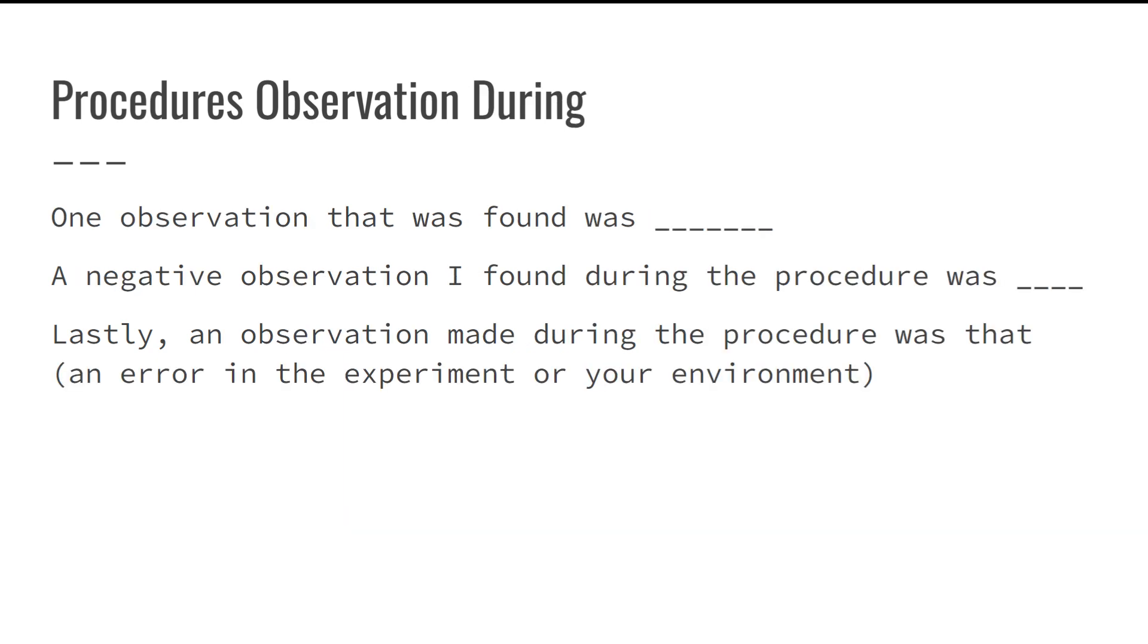Next, we're going to be looking at our procedure observations during the experiment. Some of this could be: one observation that I found was, a negative observation I found during the procedure was, lastly, an observation made during the procedure was that, and I said an error in the experiment or your environment, because something that is pretty easy to write about is something wrong, something missing.